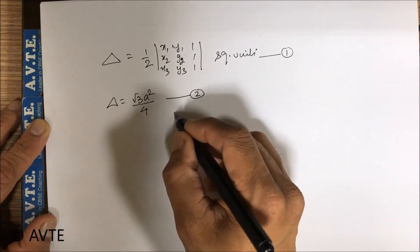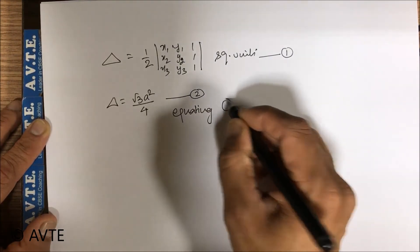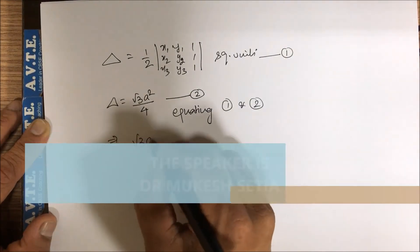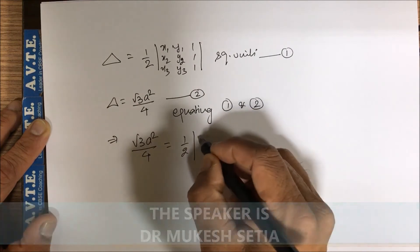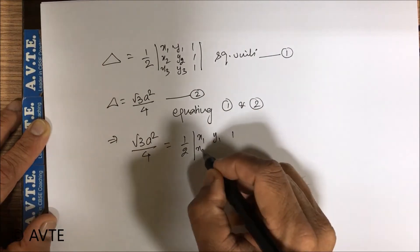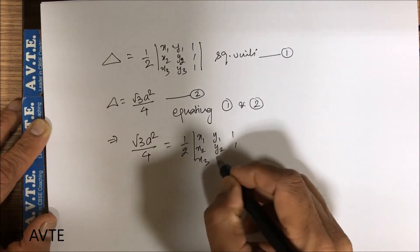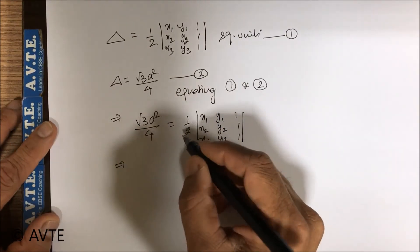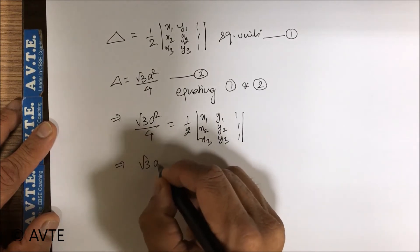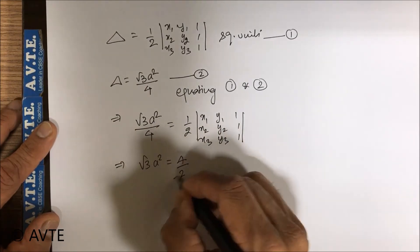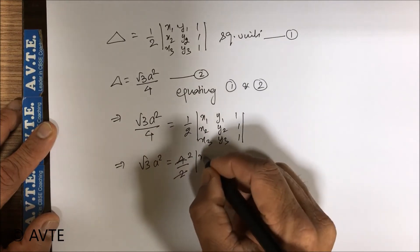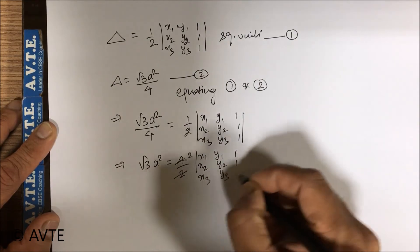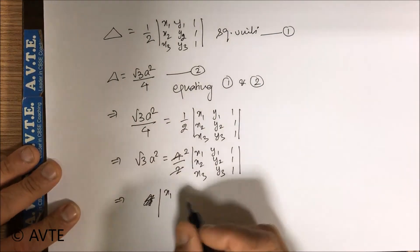First and second we get, and you can see that we can cancel 4 upon 2 as 2. So we can put the determinant as...